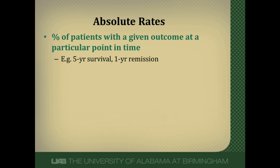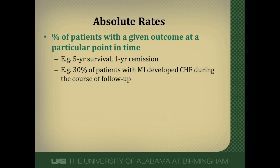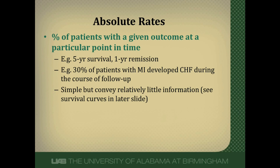Absolute rates are commonly reported as the percentage of patients with a given outcome at any particular point in time — for example, five-year survival or one-year remission. Or something like 30% of patients with an MI develop congestive heart failure during the course of follow-up. This is a very simple concept to understand and convey to patients, but it doesn't give you a lot of information, as we'll see when we talk about survival curves.